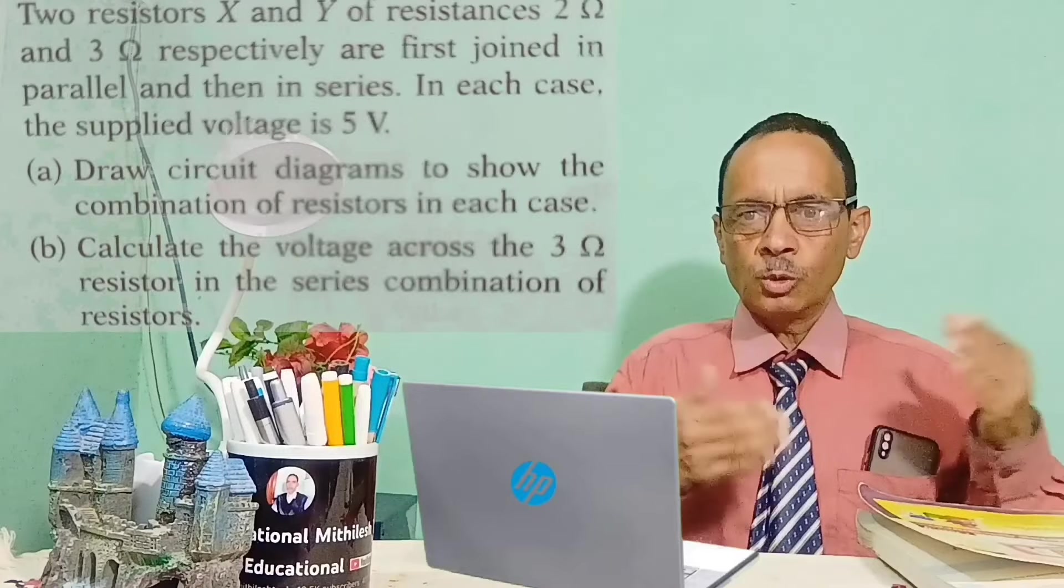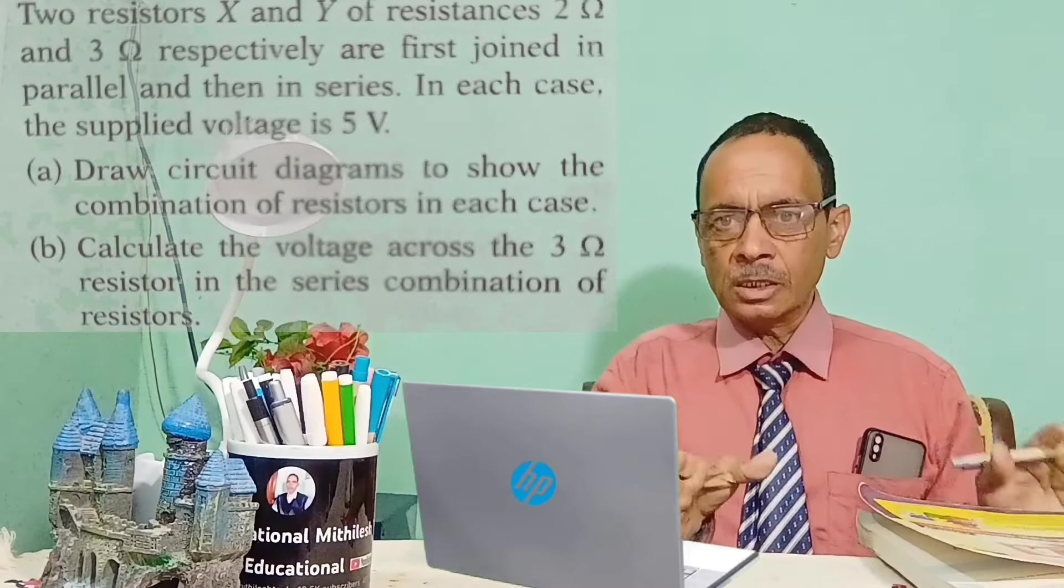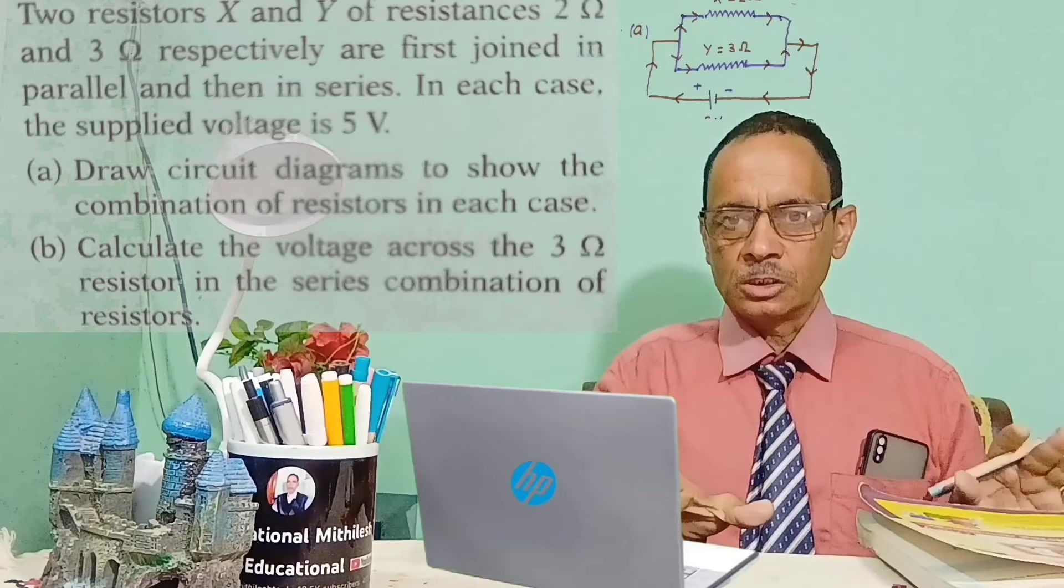Welcome all of you. According to the question, two resistances of 2 ohm and 3 ohm are first joined in parallel order and then in series.